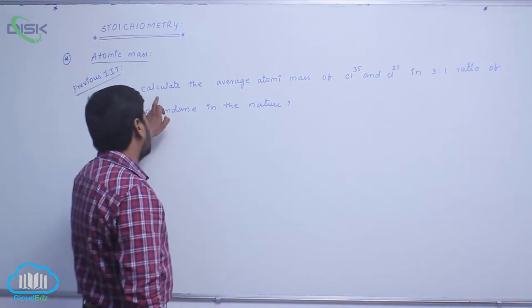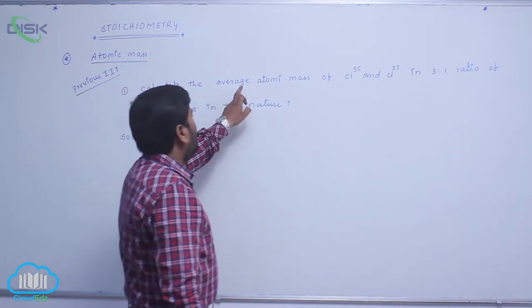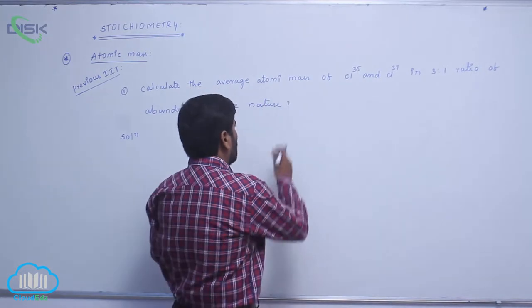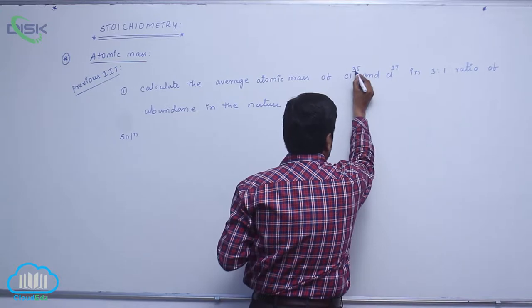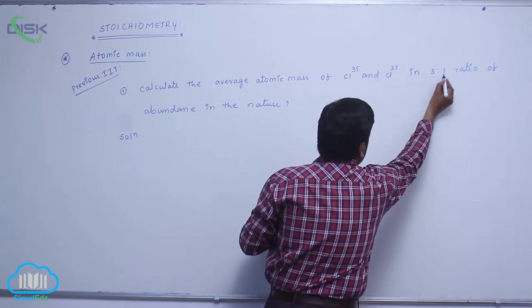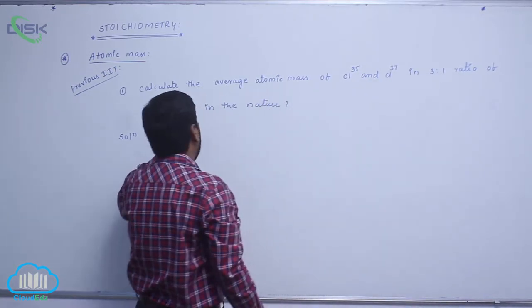Now the second problem is to calculate the average atomic mass of chlorine 35 and 37 in a 3 to 1 ratio of abundance in nature.